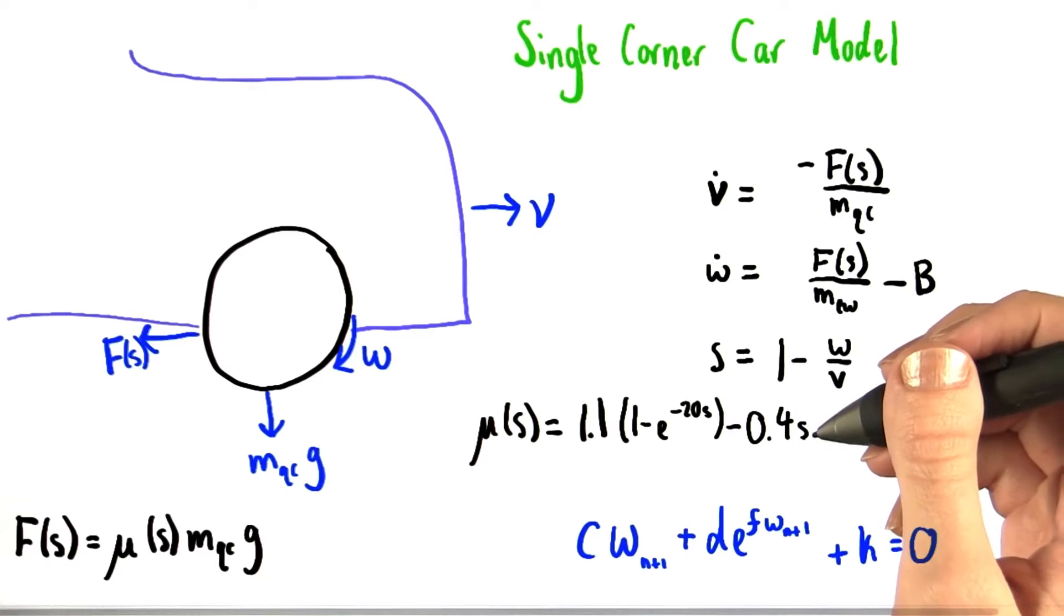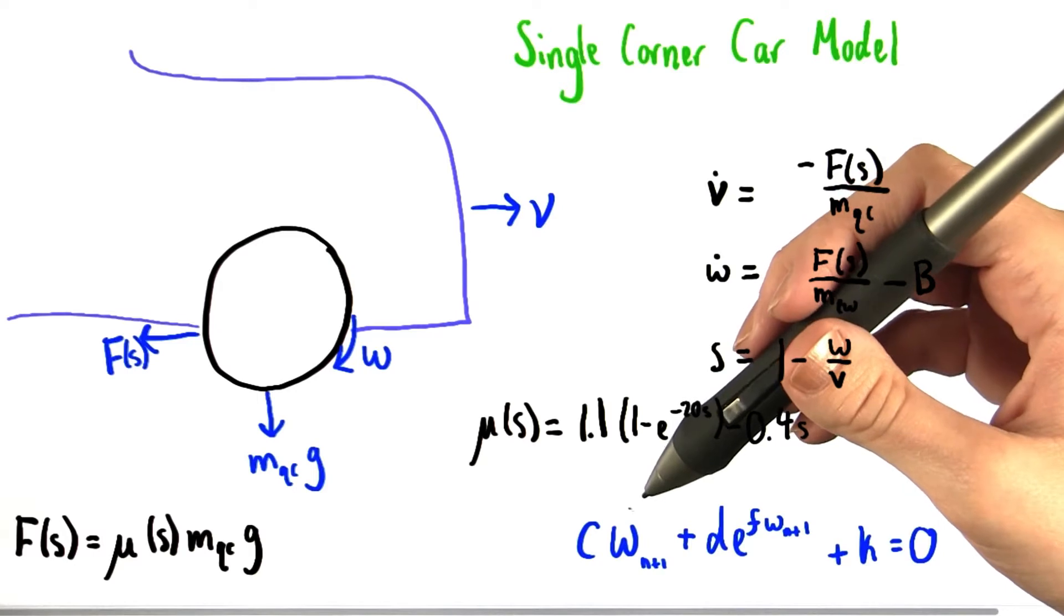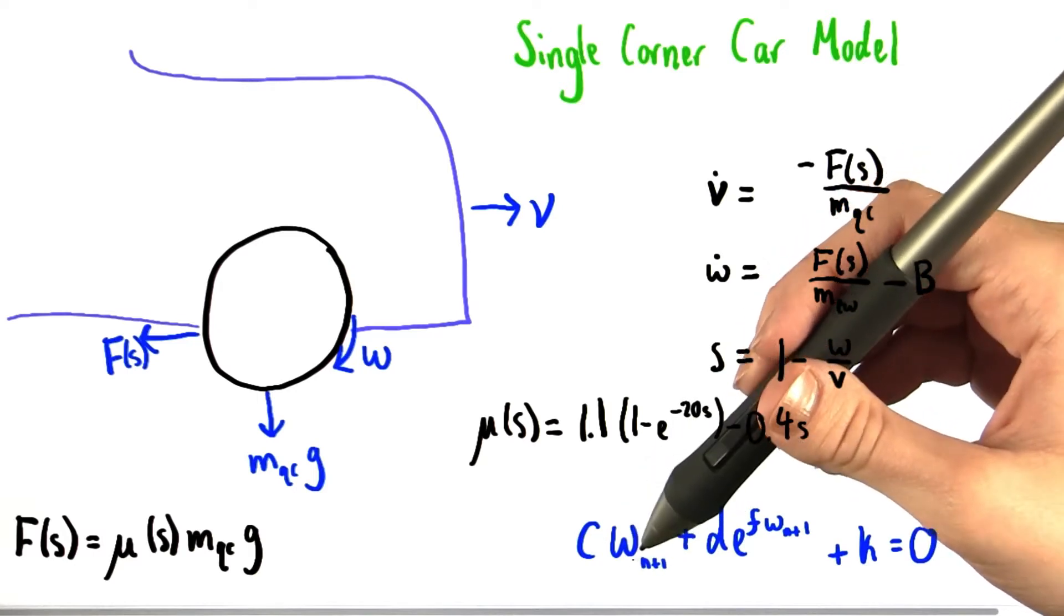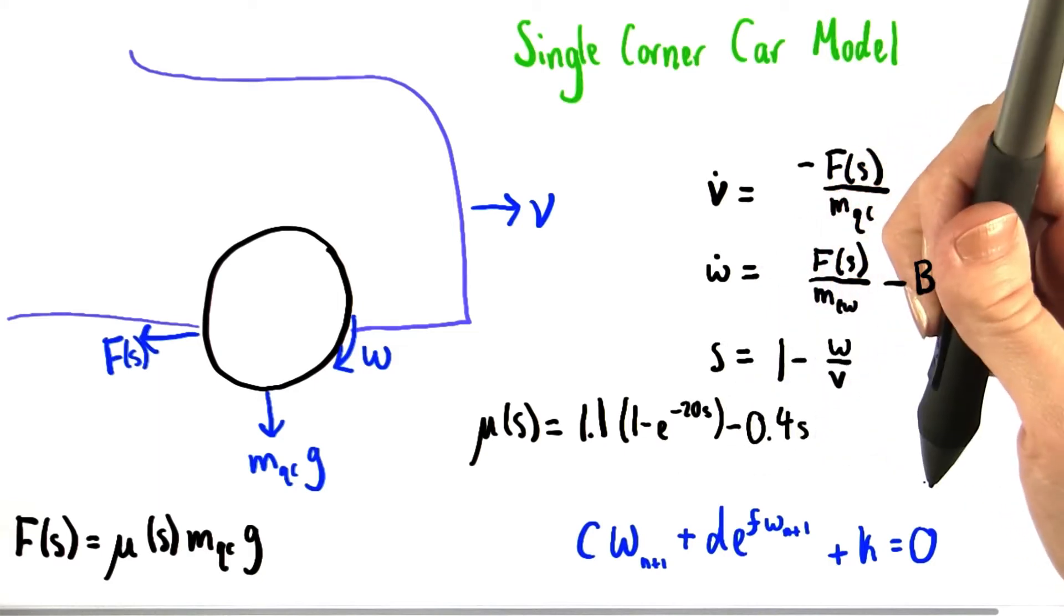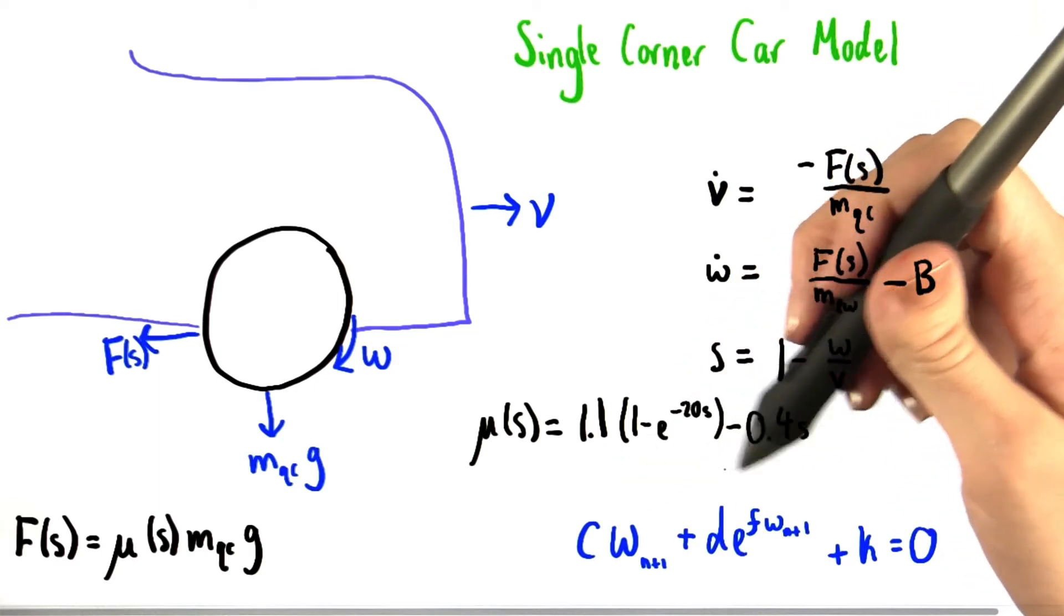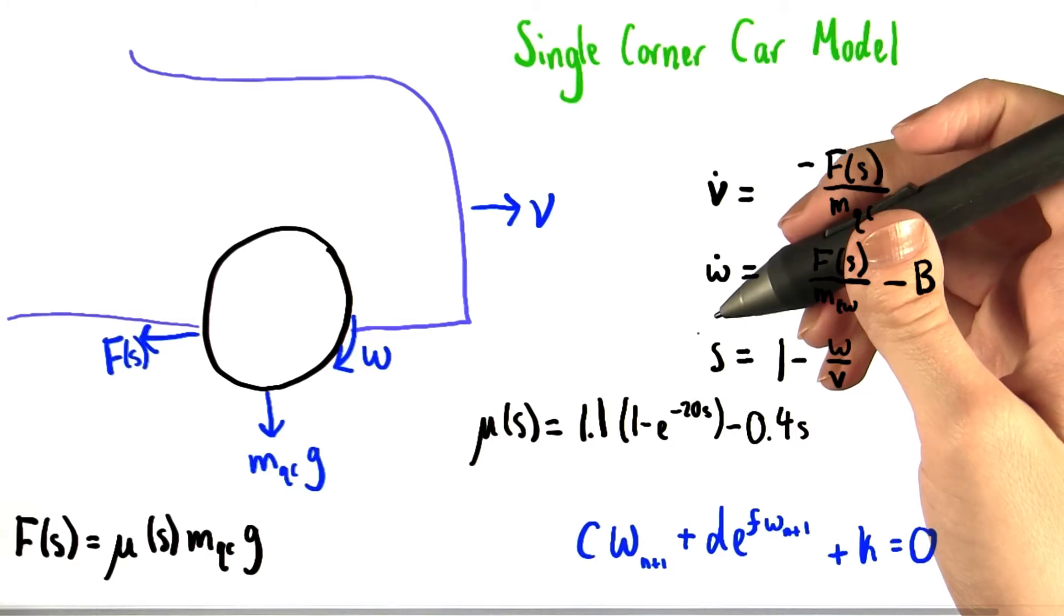We also have this expression for mu, the coefficient of kinetic friction. Your first task in this problem is going to be to find an equation for W at the nth plus 1 time step that fits this form right here. In this equation, C, D, F, and K all could depend on a number of different things.